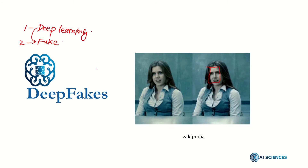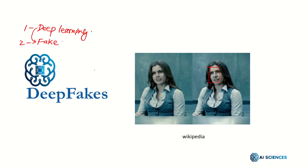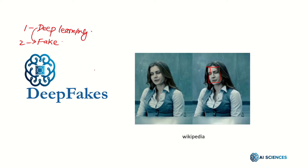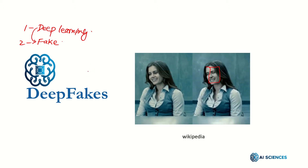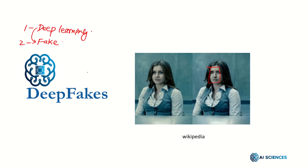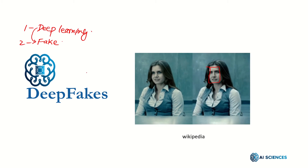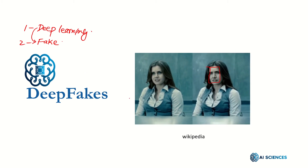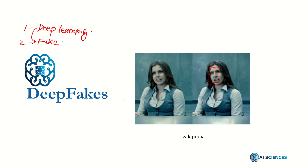The underlying mechanism of deepfakes is deep learning models such as autoencoders and generative adversarial networks, which have been applied widely in the computer vision domain. These models are used to examine facial expressions and movements of a person and synthesize facial images of another person making analogous expressions and movements. Deepfake methods normally require a large amount of image and video data to train models to create photorealistic images and videos.